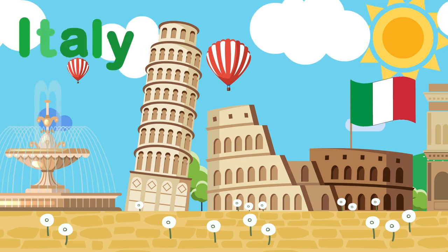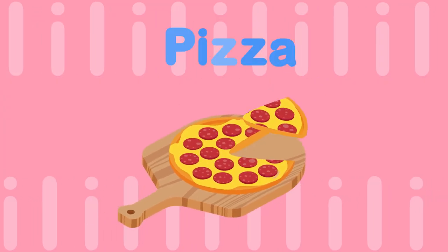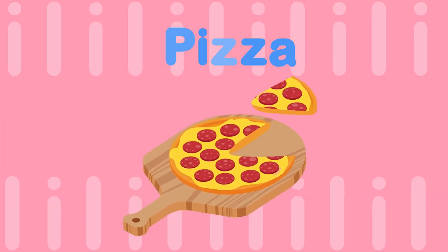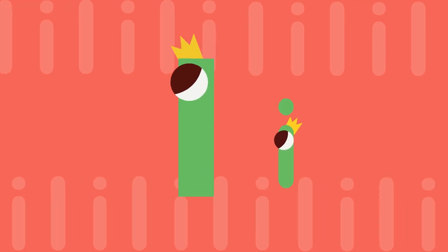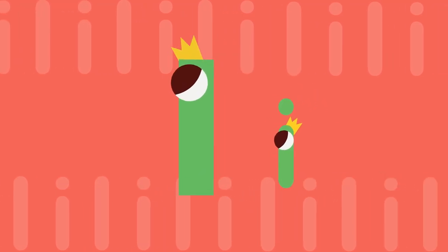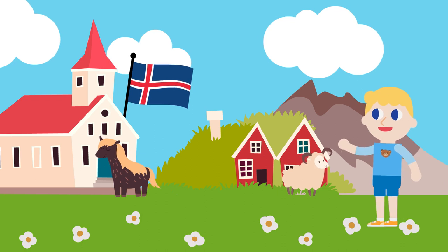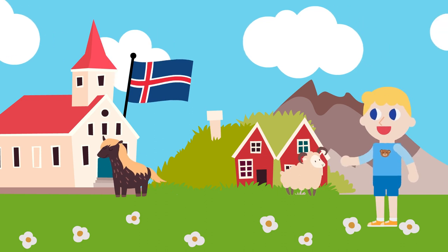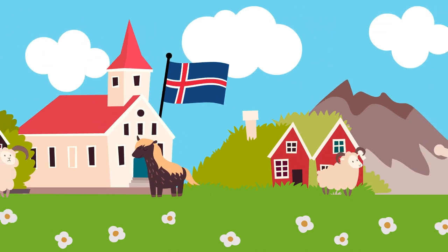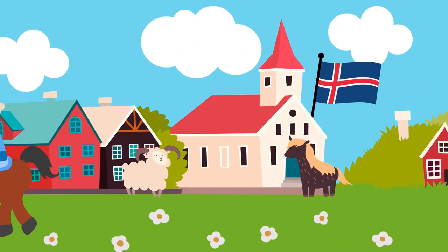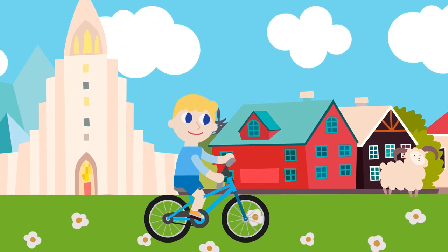I, I, Italy. I, I, pizza. Long I sounds like I, I, I. I went on a trip to Iceland, Iceland, Iceland. I could ride a horse and a bike in Iceland.